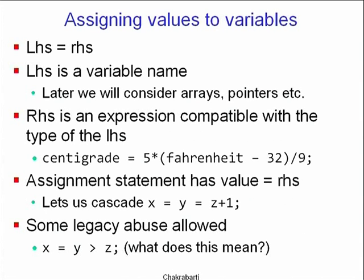How do you assign values to variables? It is pretty simple: you compute the value as the right-hand side, then say left-hand-side equals right-hand-side. For now the left-hand side is just a variable name and the right-hand side has to be an expression compatible with the type of the left-hand side. You have to be careful of the implicit type of the right-hand side.